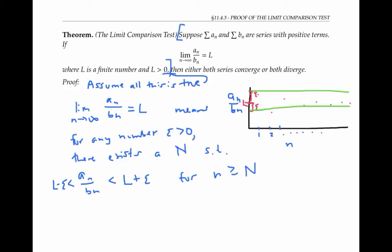In the picture here, a value for capital N of three would work, because for all little n's bigger than or equal to three, the ratios are trapped in between L minus epsilon, which is right here, and L plus epsilon, which is that upper bound here. Let's pick a small enough epsilon so this interval doesn't extend all the way down through zero on the y-axis — it just extends through positive numbers near L. Recall that L itself is a positive number, so it's possible to trap it in a little interval that's all positive numbers.